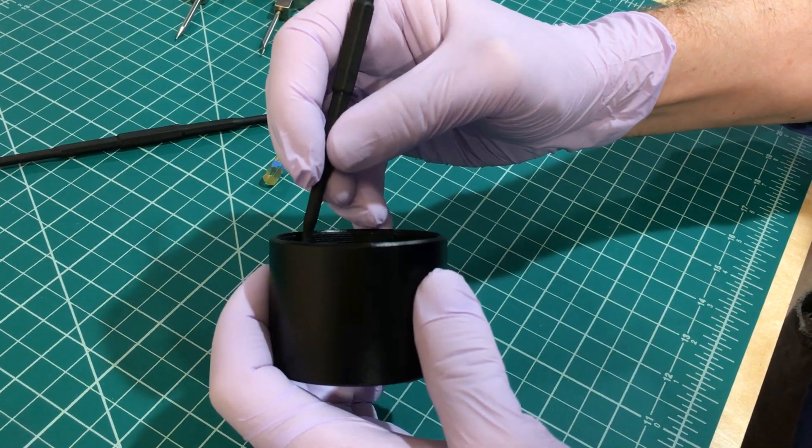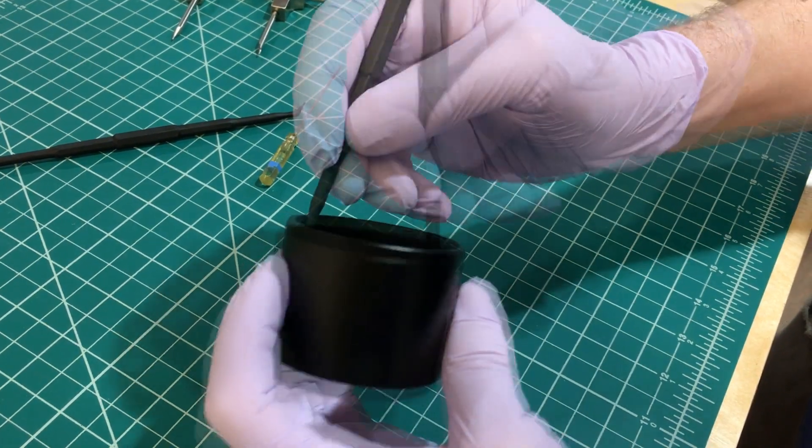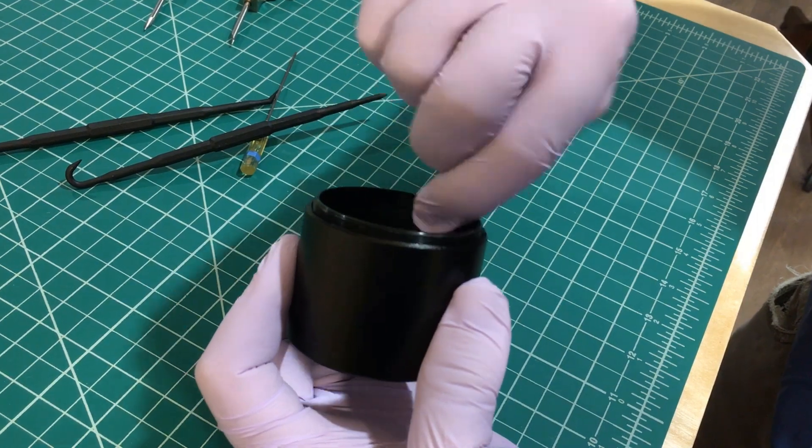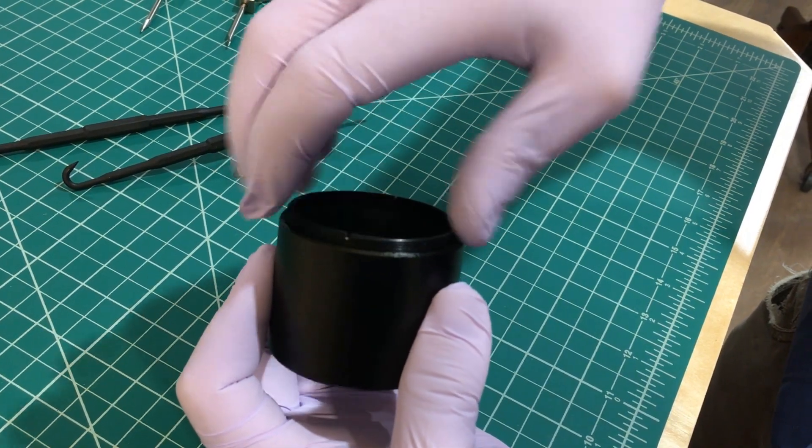For this example, we are going to test this 2 inch diameter lens we found in optical surplus. A new lens like this would cost at least $100. Can we reuse this one?